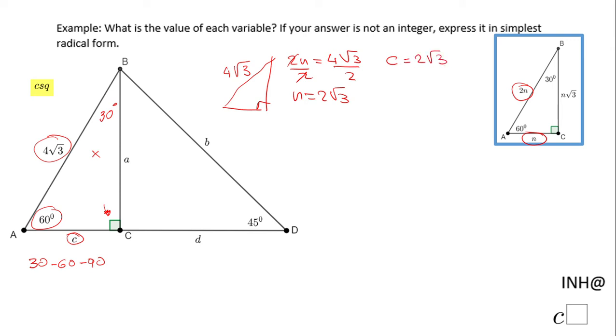But now if we take a look, the other leg is n√3. And if you take a look in our triangle, the other leg is a. So a will be this n times this √3. So we're gonna have a equals 2 times 3, so a will be 6.